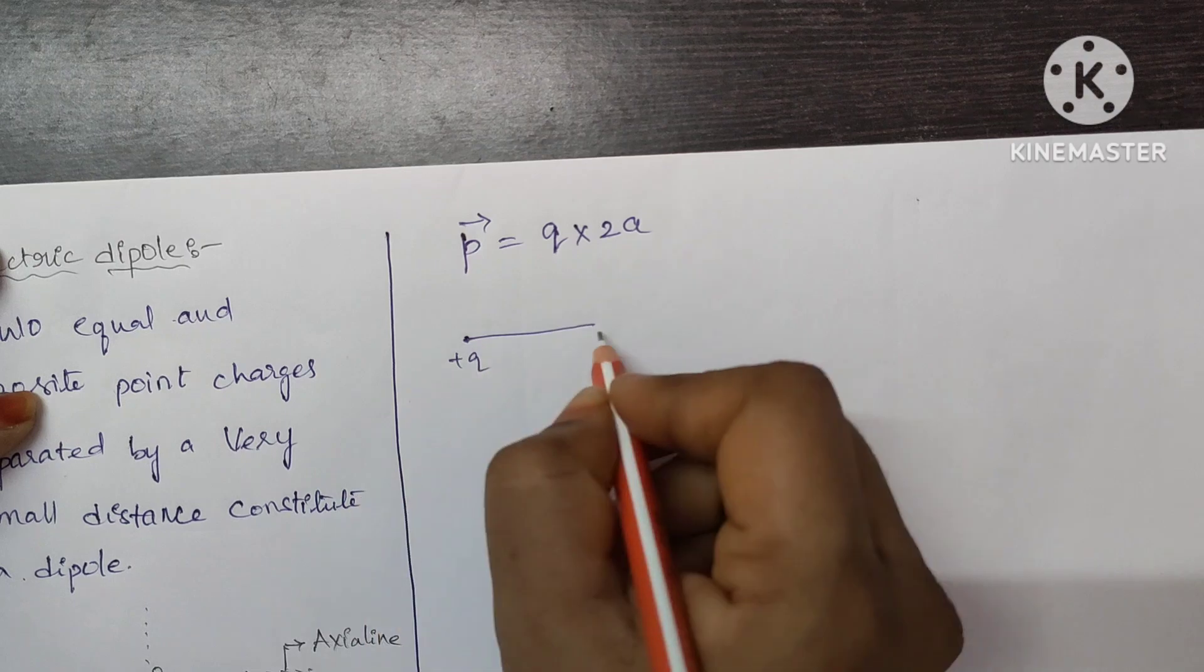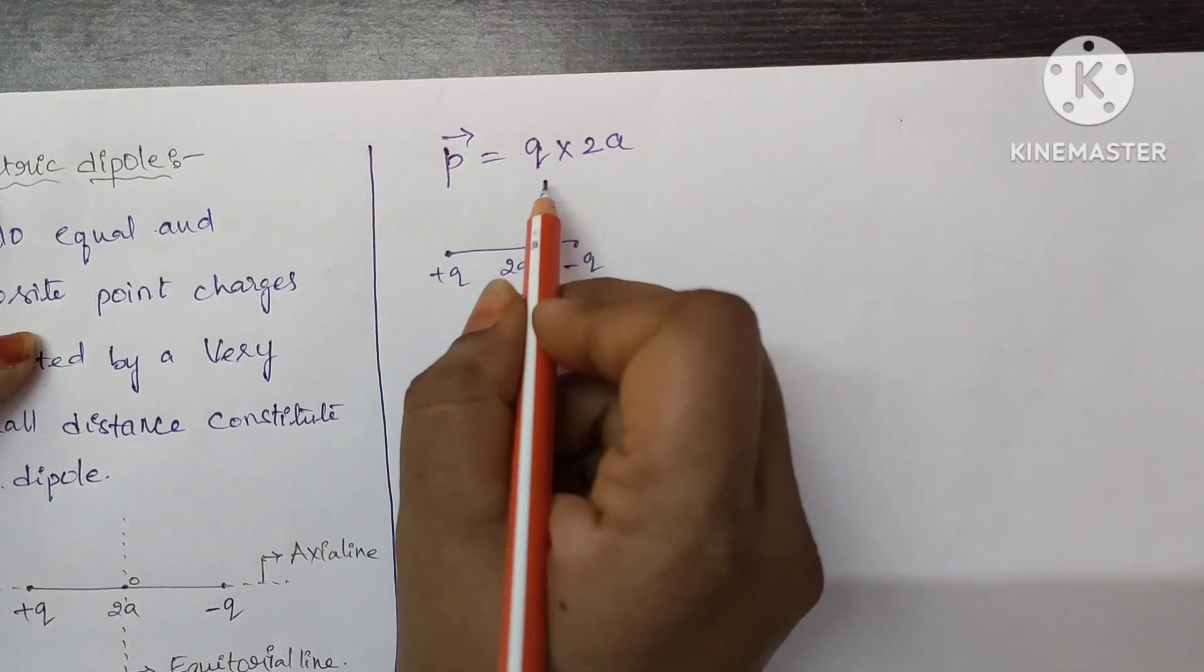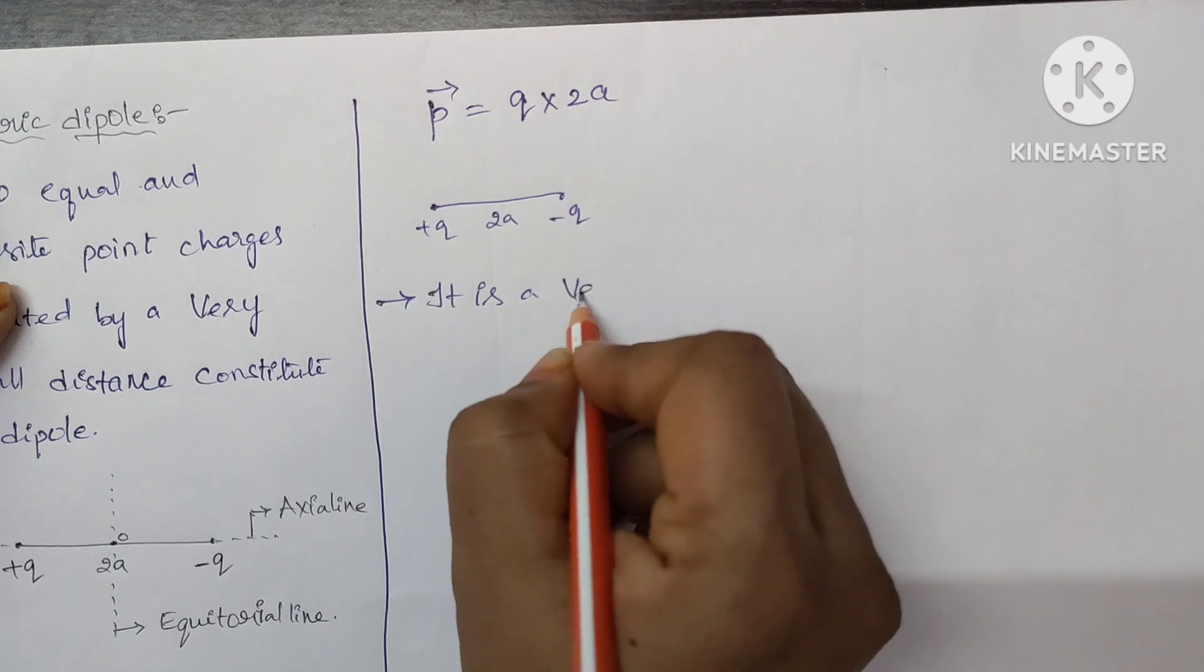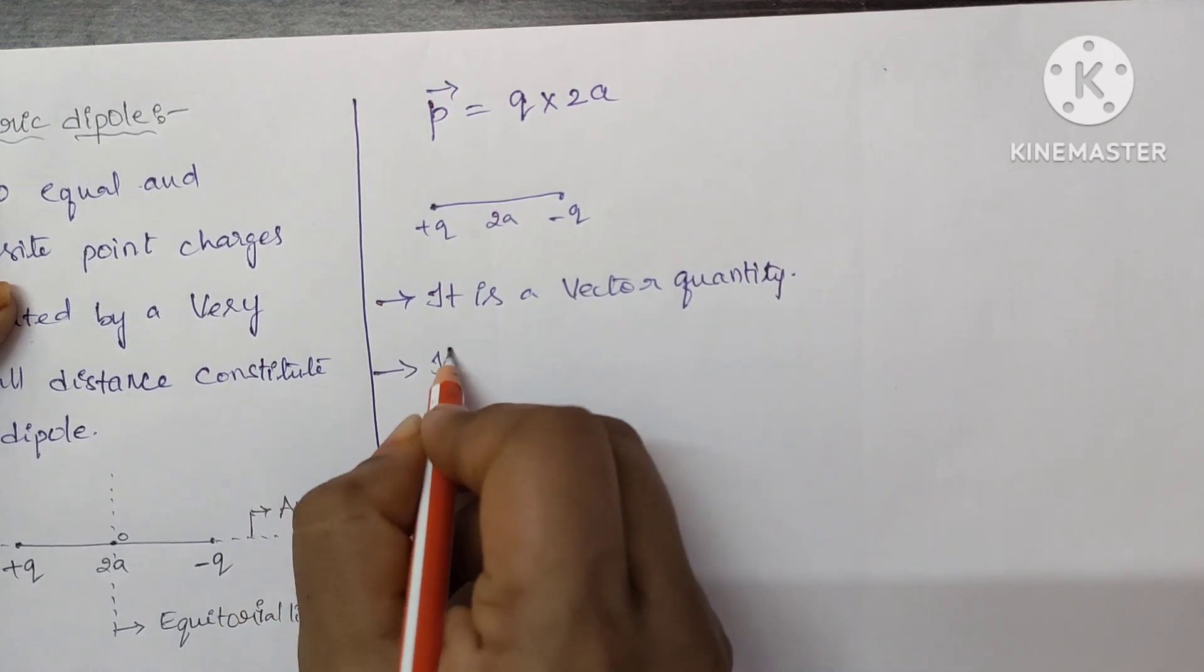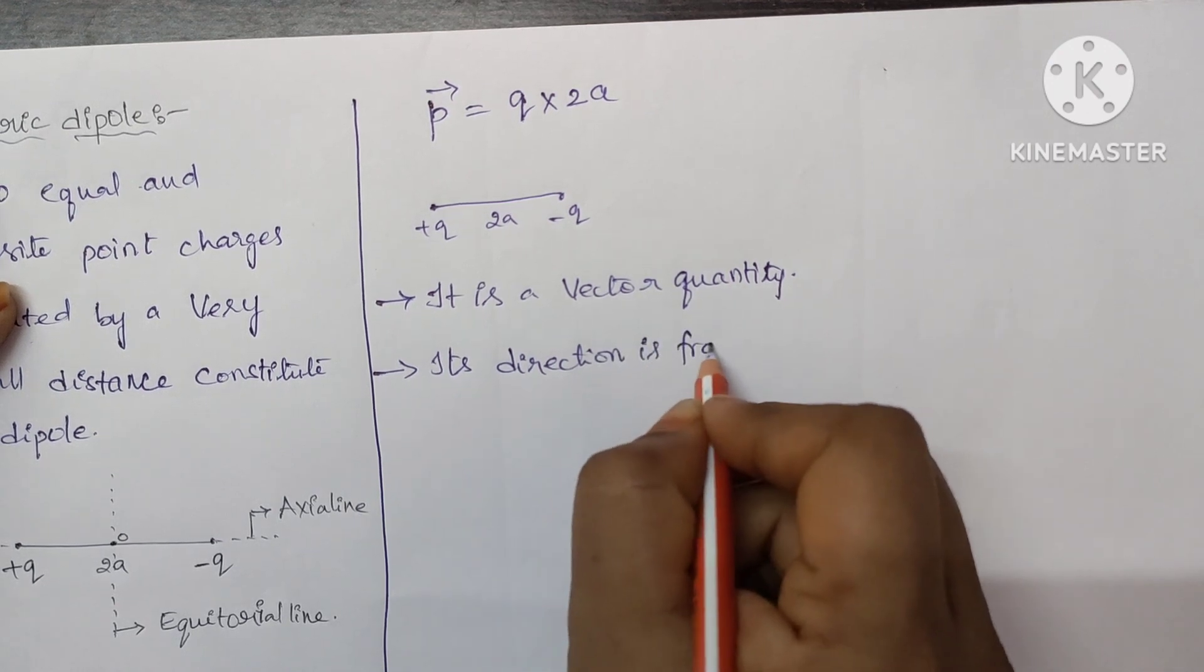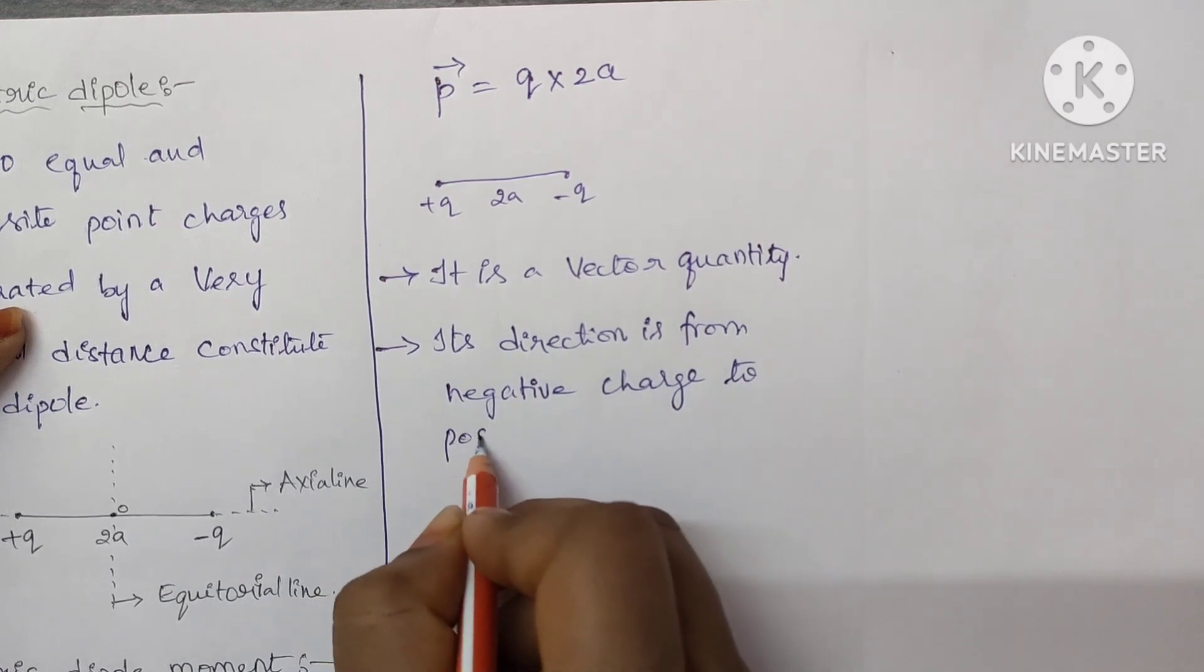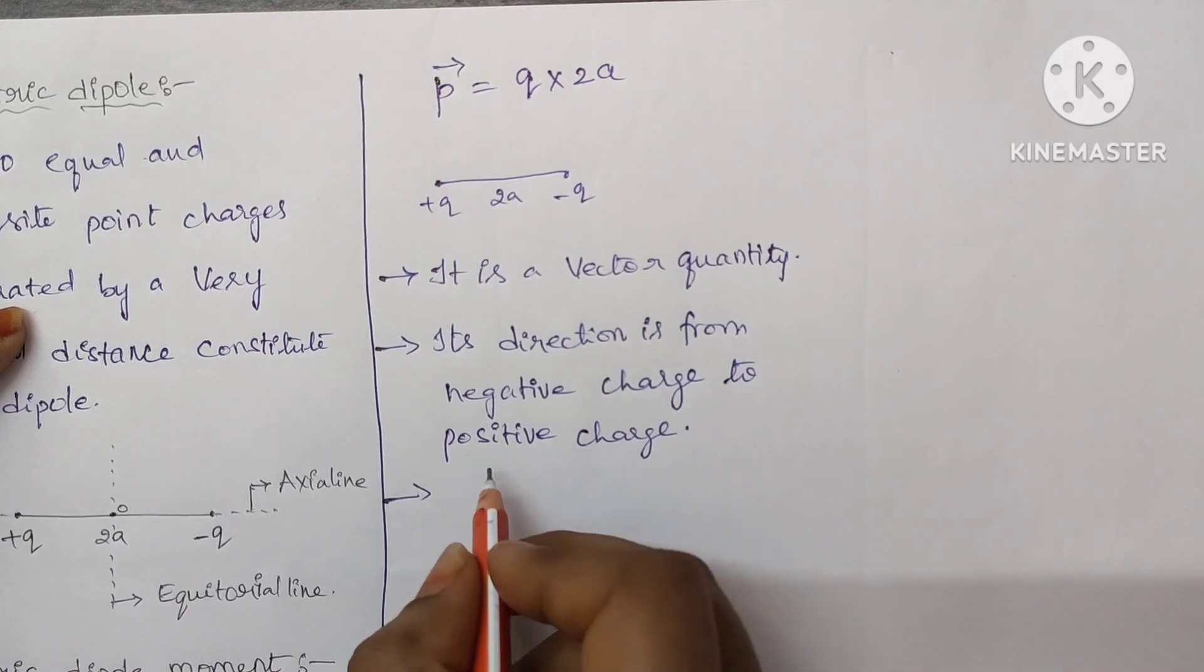Suppose here if you consider positive charge and negative charge, the distance between them is let us say 2A. So P is equal to Q into 2A. Electric dipole moment is a vector quantity and its direction is from negative charge to positive charge. It also determines the strength of the dipole.